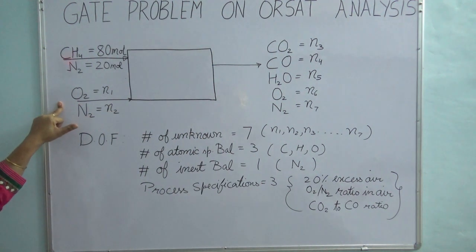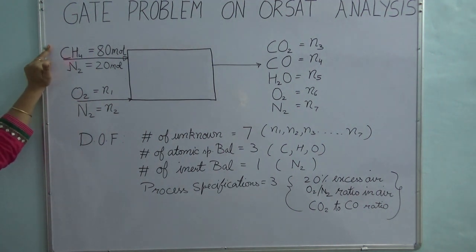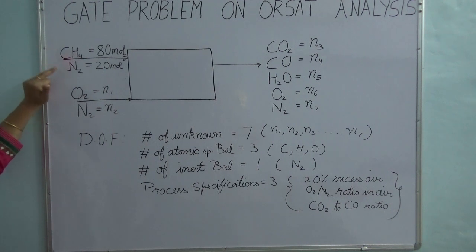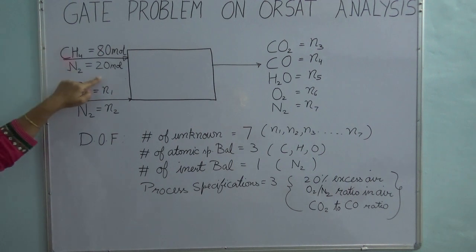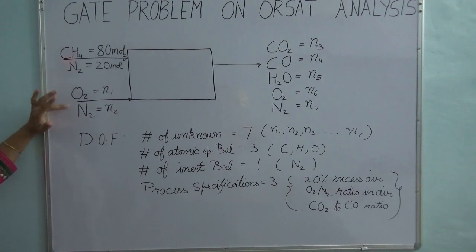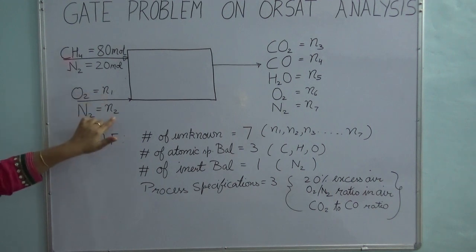I will explain the problem to you and the problem statement is given in the description box. So over here we are burning methane with excess air, and methane is present along with nitrogen. It is given that 80% is methane and 20% is nitrogen. So we are taking a basis of 80 moles of methane and 20 moles of nitrogen, that is 100 moles of incoming fuel. Then you have 20% excess air. Air will have oxygen and nitrogen — we don't know how much we are using, so I am going to give it as N1 and N2 variables.